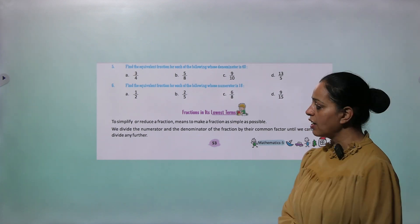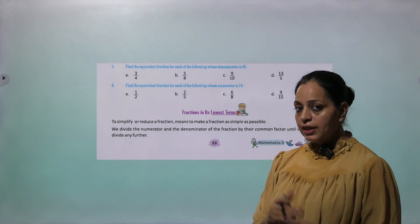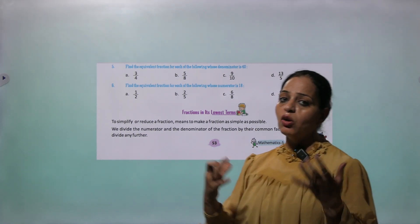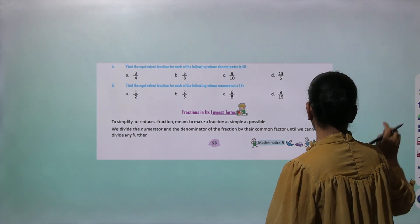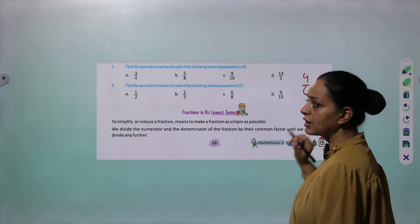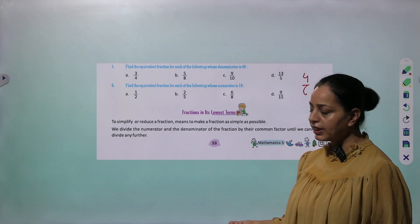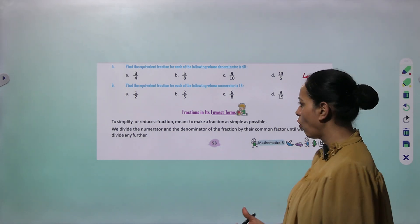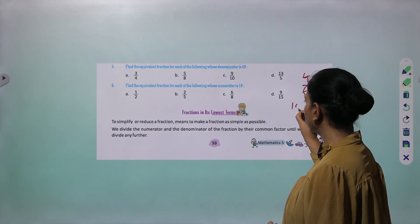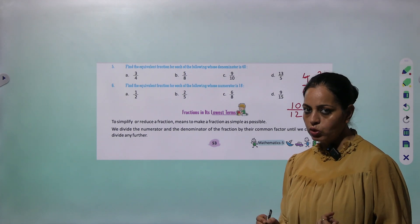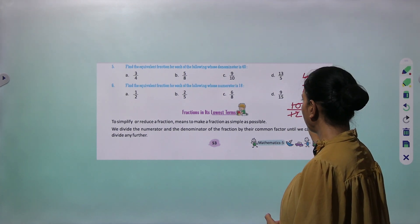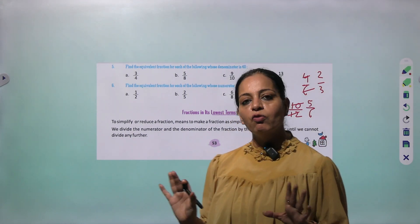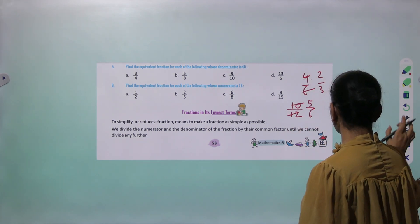Now we come to fractions in their lowest terms. To simplify or reduce a fraction means to make it as simple as possible. For example, 4 by 6 — both are divisible by 2, so 4 divided by 2 is 2, and 6 divided by 2 is 3. So 2 by 3 is the lowest term. Another example: 10 by 12, divide both by 2 to get 5 by 6. Since 5 and 6 are not divisible by any other number except 1, 5 by 6 is the lowest term. We divide the numerator and denominator by their common factor until we cannot divide any further.